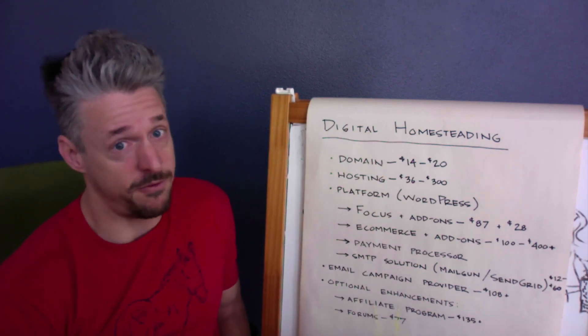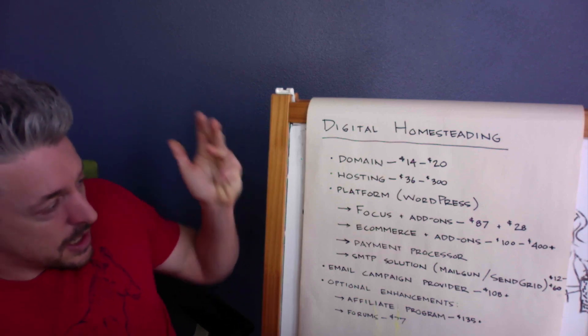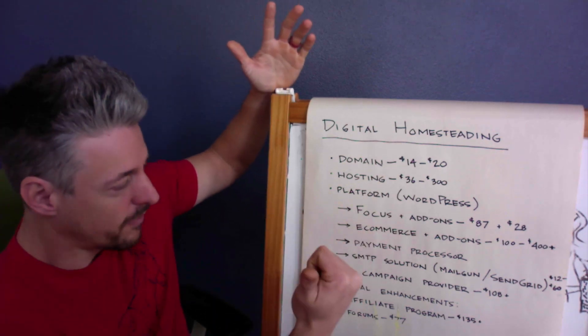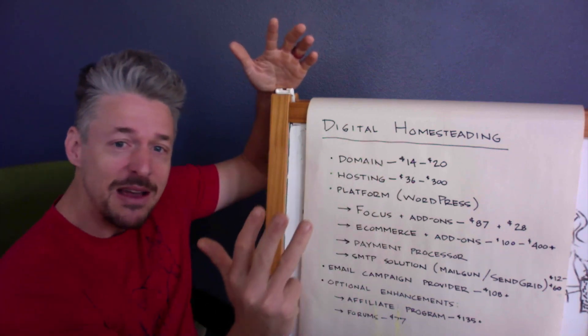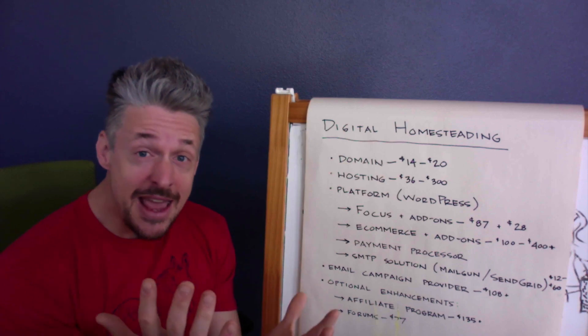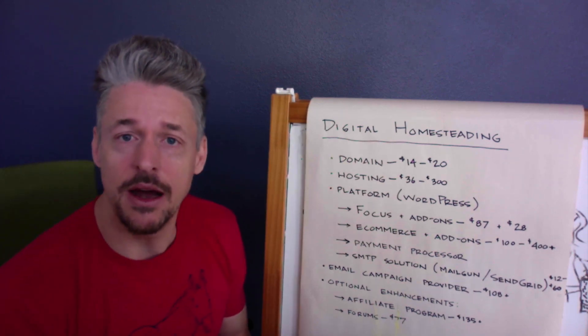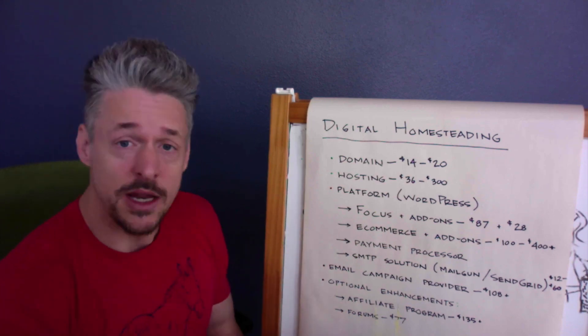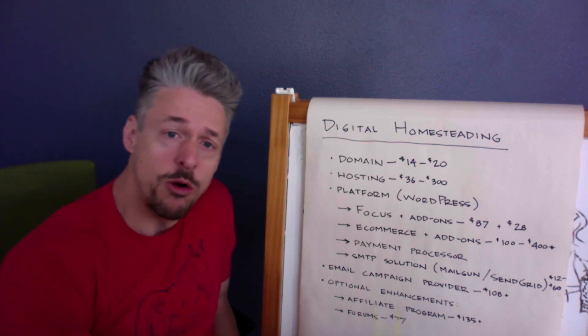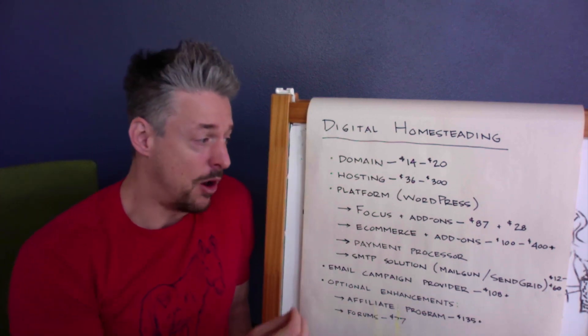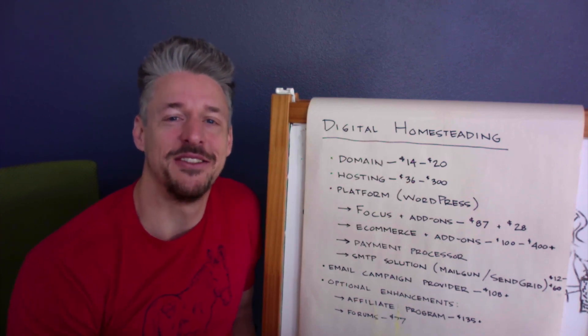But there it is. That's a fair amount of separate components. Domain, hosting, theme, add-ons, e-commerce, e-commerce add-ons. They didn't even really go over that. SMTP solution, email campaign provider, affiliate program, forums. That's 10 things. That is a lot to deal with, but that's the absolute state of running an e-commerce WordPress website. This is what you're going to need. These are the costs you can anticipate. And now you've got a kind of a roadmap for how to put this thing together and a way to manage your expectations as you build your website. All right. Thanks for watching. See you in the next video.